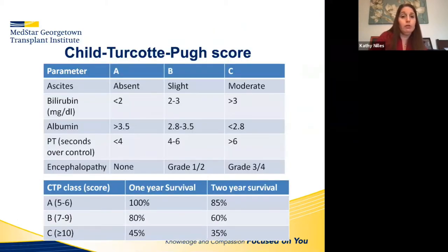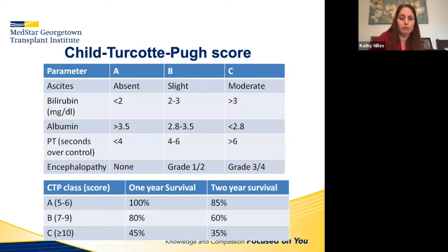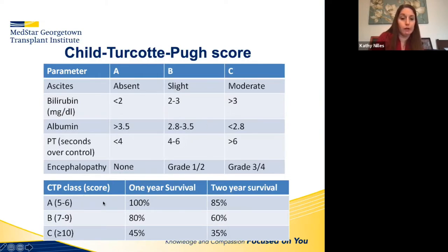We used to use the Child-Turcotte-Pugh (CTP) score to give a numerical quantification, since prior scales only gave binary stages rather than a spectrum. You've probably seen this before — you have class A, B, and C, with points for ascites, bilirubin, albumin, PT, and encephalopathy. You calculate total points to determine class, and the survival follows: class A patients are generally compensated with good overall survival, versus class C where one-year survival is 45% and two-year is 35%.